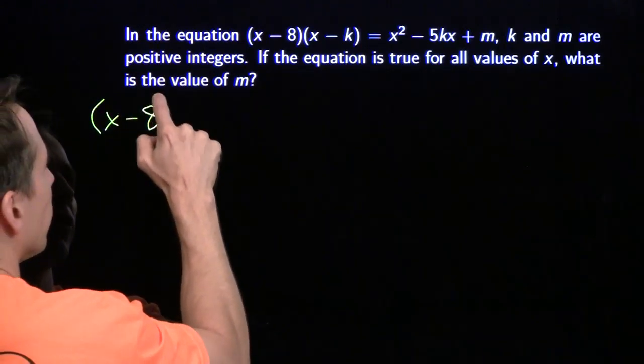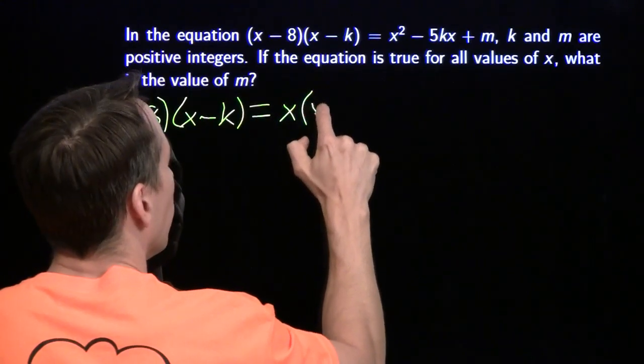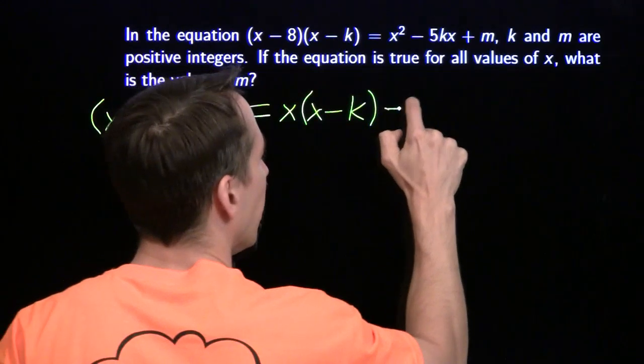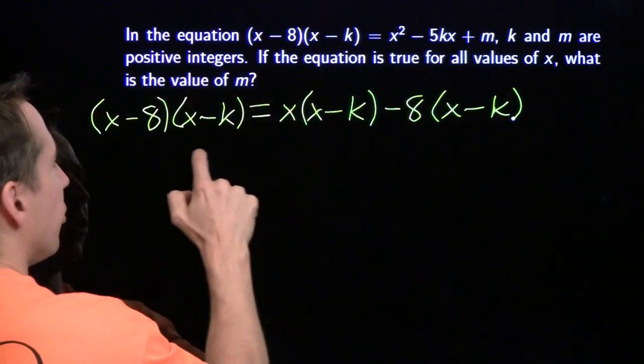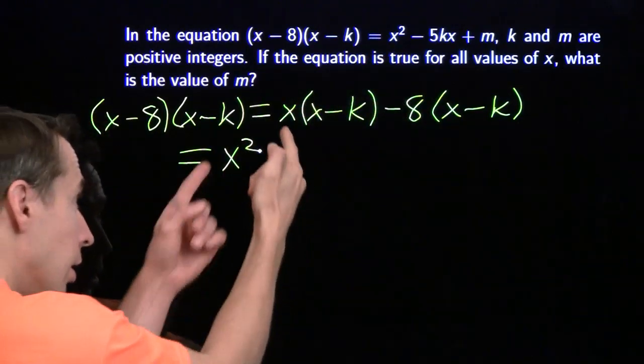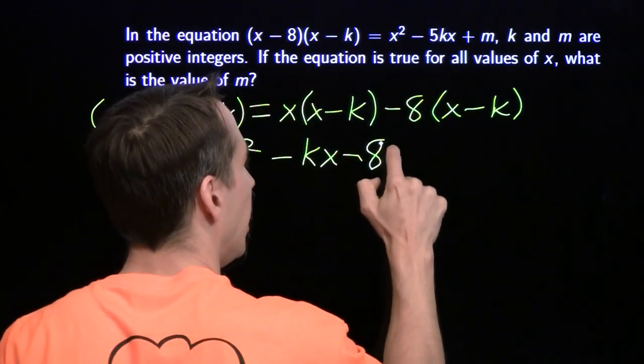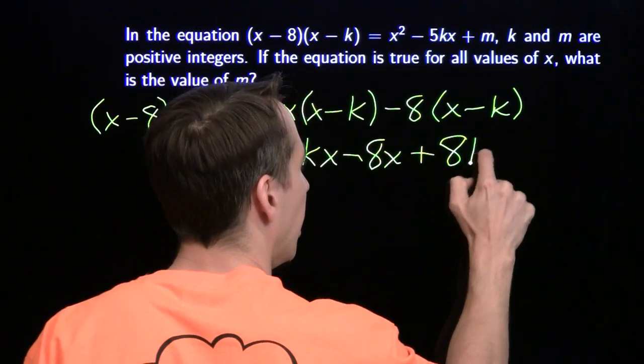x minus 8 times x minus k, and yeah, I'm going to do it the old man long way. I'm going to use the distributive property, x times x minus k minus 8 times x minus k. And we multiply this out. x times x gives us x squared, minus kx minus 8x plus 8k.